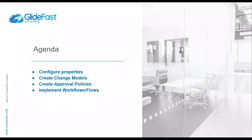Let's start with the basics. We're going to briefly cover today: configuring the initial properties to turn on change models. The plugin comes out of the box with newer instances, or you may have to enable it, but there are still some properties that have to be turned on for any of it to be visible to users. We'll also go through creating a change model, creating an approval policy, and some of the workflows and flow designer flow tie-ins to the change models.